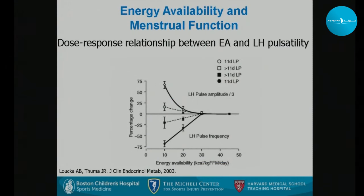Ann Lauchs did studies where she looked at recreational adult women in a very controlled environment and affected their energy availability. She found that as energy availability dropped below 30 kcal per kg of fat-free mass per day, there was a big change in LH pulsatility and LH amplitude — an asymptotic relationship — with dramatic changes as the number dropped below 30.